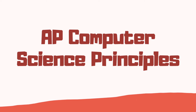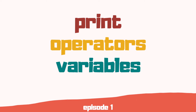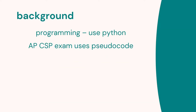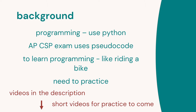A big part of computer science principles is learning programming. This is the first in a series of videos where we start with print operators and variables. We're going to use Python to learn programming, but in the AP exam they use pseudocode. Learning programming is a bit like riding a bike — you need to practice it, so we'll include examples and practice videos. Subscribe and hit that notification bell so you know when we're going to release these short videos.